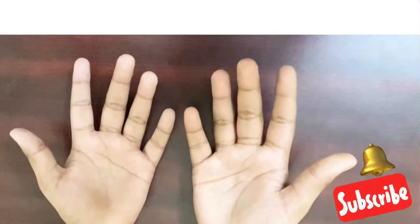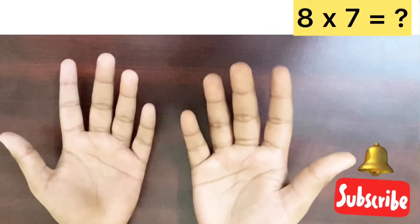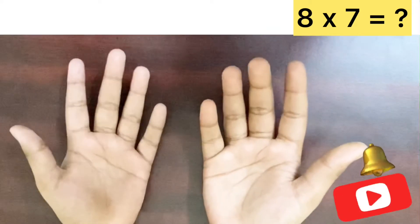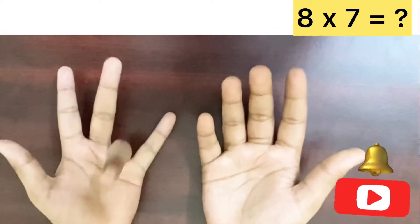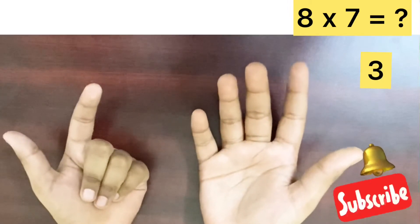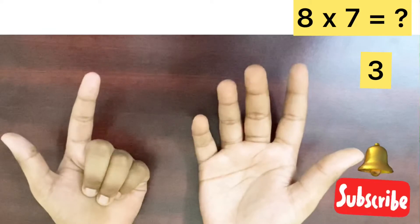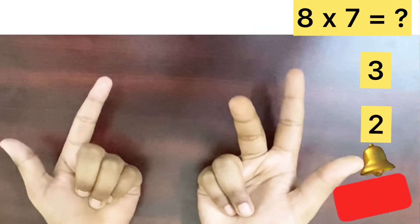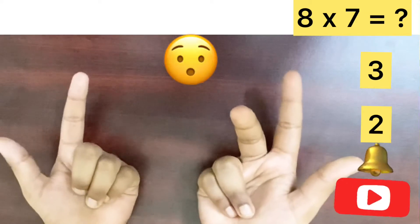We will see an example how the trick works. Now, 8 multiplied by 7. Fold your left hand fingers till the number 8 down. 6, 7, 8. Now, fold your right hand fingers till the number 7 down. 6 and 7. That's all. You got an answer now. But how?